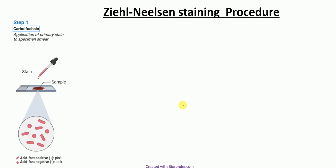The first step in Ziehl-Neelsen staining is the application of carbol fuchsin, which is the primary stain, to the bacterial smear. After this step, both acid-fast bacteria and non-acid-fast bacteria appear pink in color.